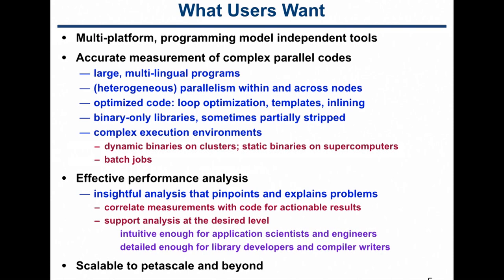The goal is to provide insightful analysis that explains what the problems are and correlates measurements with the code. Rather than just saying your performance is terrible, we want to be able to say: on line seven of this file you have a problem, and it's costing you a 25% scalability loss. Associating performance losses with the source code is an important part of the tool.